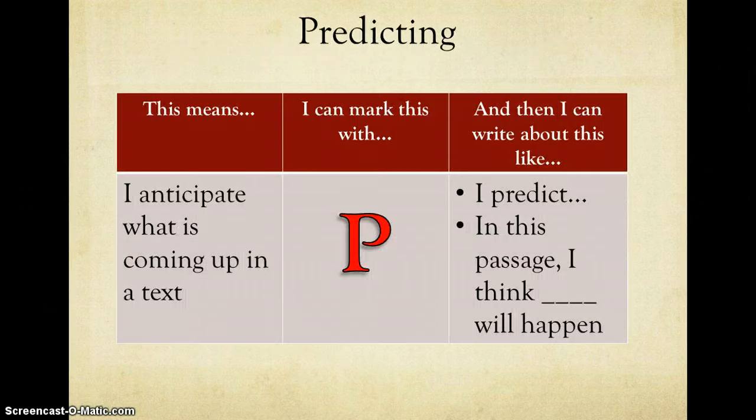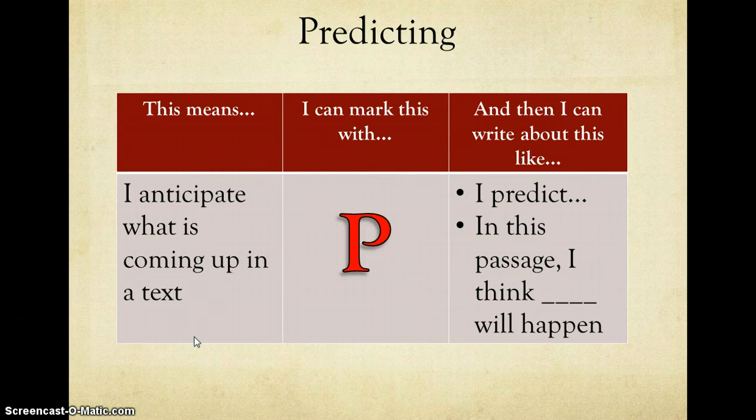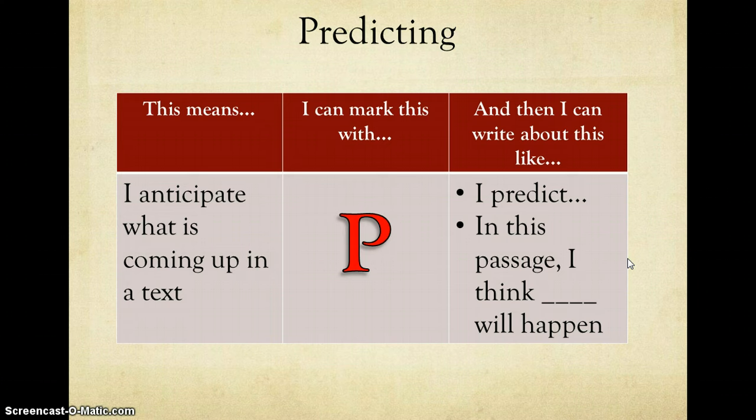Let's get started first with predicting. As I introduce each strategy, I'm going to show you this chart. The first column here focuses on the student-friendly definition. So predicting means that you're anticipating what's coming up in the text. This symbol here that you saw in the previous slide indicates how you'll use this strategy in your annotations. And finally, this last column provides you with sentence stems that will allow you to communicate your thoughts when using this strategy in your annotations.